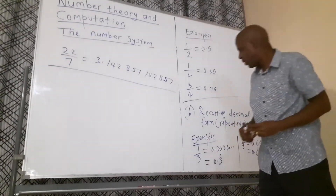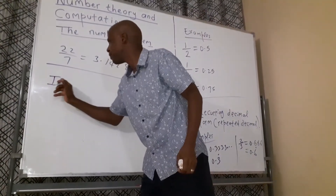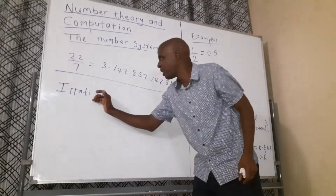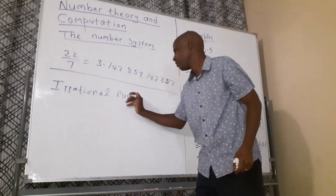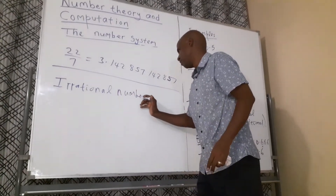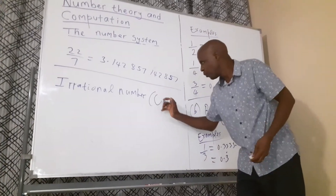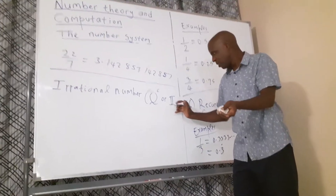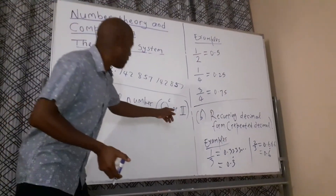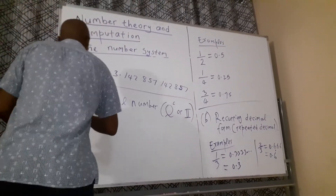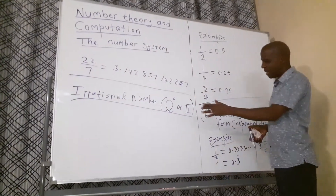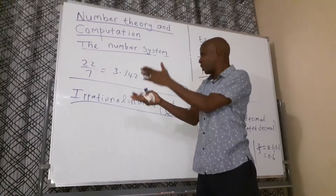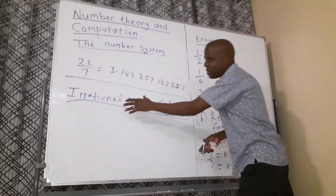The last form is called an irrational number. Irrational numbers are denoted by Q complement, or simply the letter I, because irrational starts with I. The rational number and the irrational number are the other side of the same coin. Rational numbers can be expressed as a fraction, but irrational numbers cannot be expressed as a fraction.